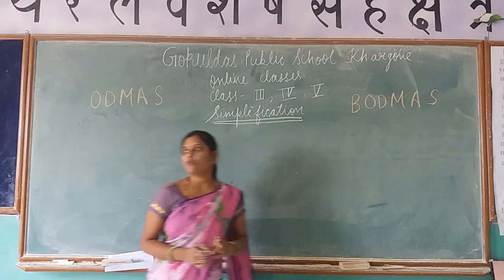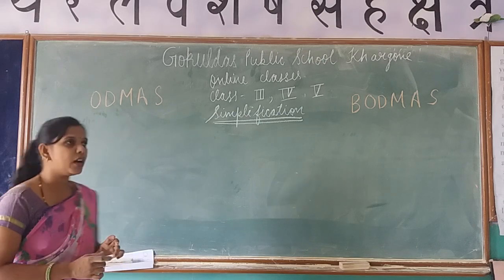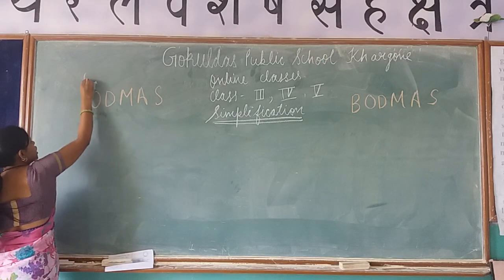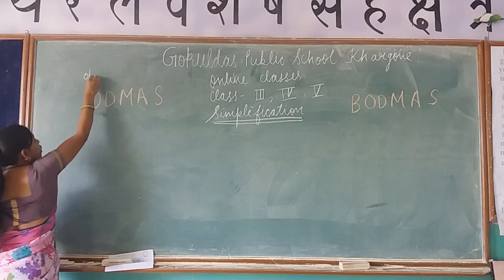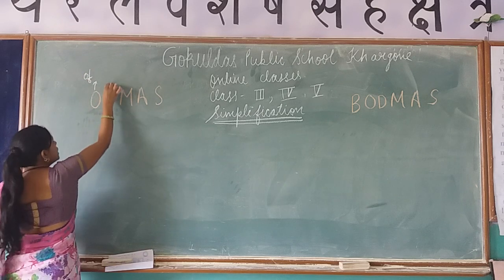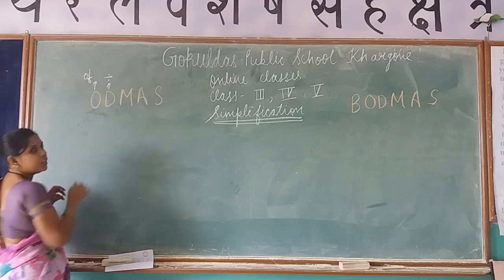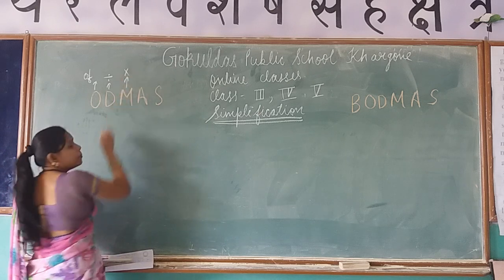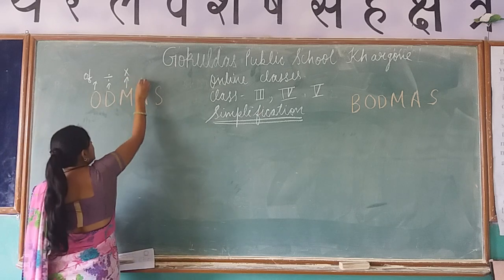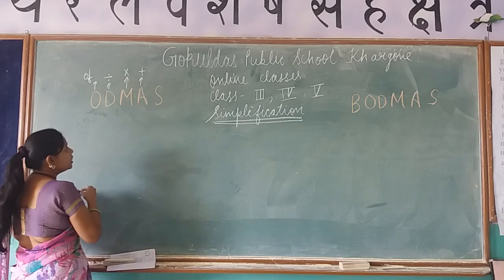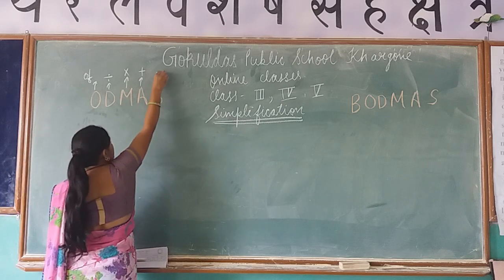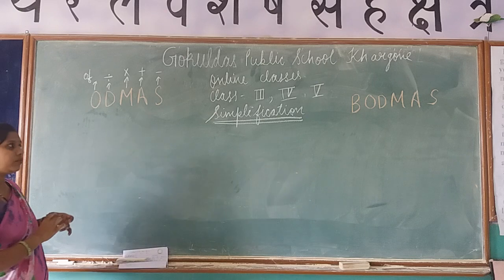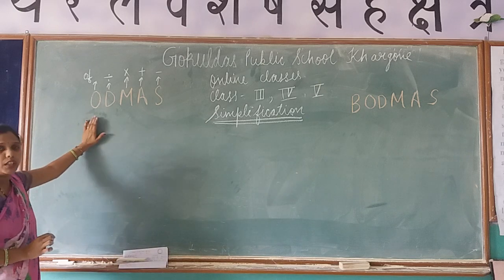First, what is the ODMAS rule? ODMAS is a short form where O stands for 'Of', D stands for Division, M stands for Multiplication, A stands for Addition, and S stands for Subtraction.